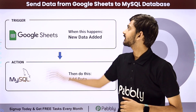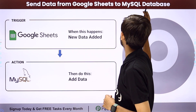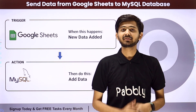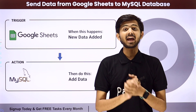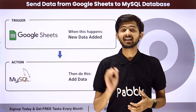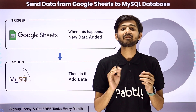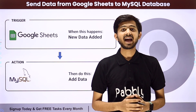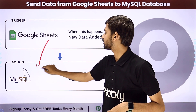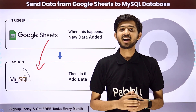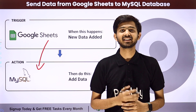Hello everyone. Today our topic is how to send data from Google Sheets to MySQL database. My objective is that whenever I add new data in my Google Sheet as a new row, I want to send this data automatically to MySQL server and add it in my MySQL database. To create this connection, I'm going to use Pabbly Connect, which is an amazing software for automation and integration.